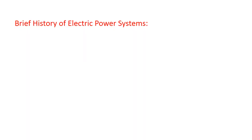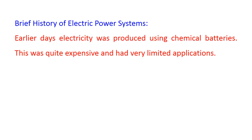Now we will dig into the past and try to understand the brief history of electrical power systems. In earlier days, electricity was produced using chemical batteries. This was quite expensive and had very limited applications.